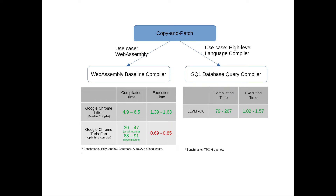For our SQL database query compiler on TPC-H queries, compared with LLVM O1, our compilation time is 3 orders of magnitude faster, and our execution time is also 2% to 57% faster. And compared with LLVM O3, our compilation time is 3 orders of magnitude faster, and our execution time is from 4% slower to 39% slower.